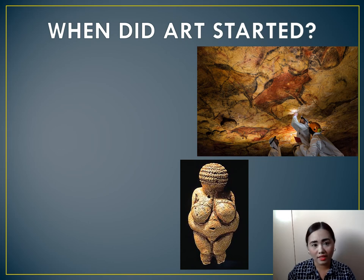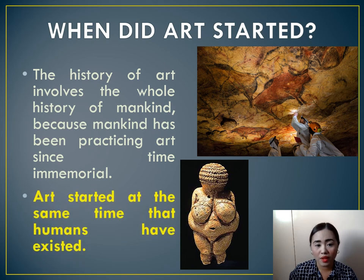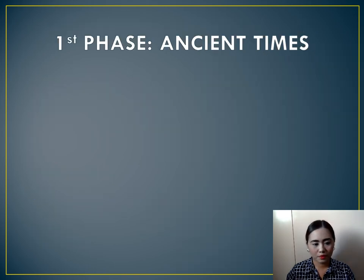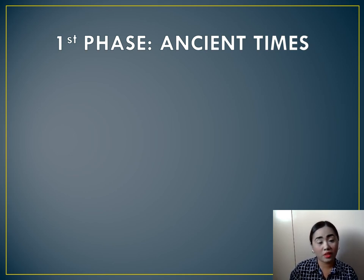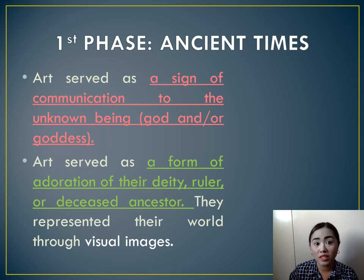When did art start? The history of art involves the whole history of mankind, because mankind has been practicing art since time immemorial. We can say that art started at the same time that humans have existed. The history of art can be divided into two phases. During ancient times, art served as a sign of communication to an unknown being — may it be a god or goddess — and as a form of adoration for their deity, ruler, or deceased ancestor, representing their world through visual images.